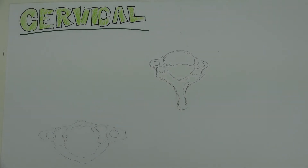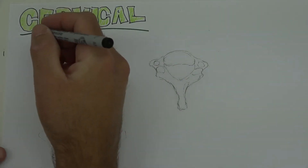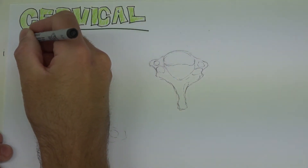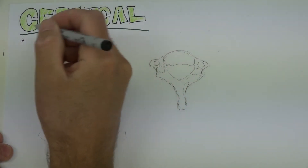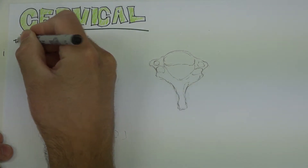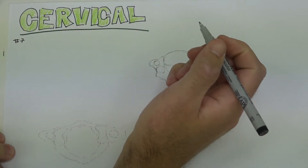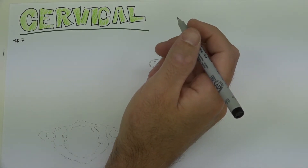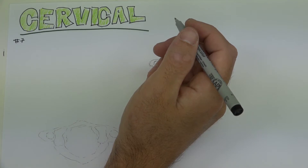Welcome to a short video which is going to be in three parts, talking about the osteology and the joint structures of our vertebral column. Let's start with the cervical vertebrae. There are seven cervical vertebrae, and when we talk about the thoracic and the lumbar, there'll be 12 and 5. A good way to remember that is like breakfast, lunch, and dinner — 7, 12, and 5.